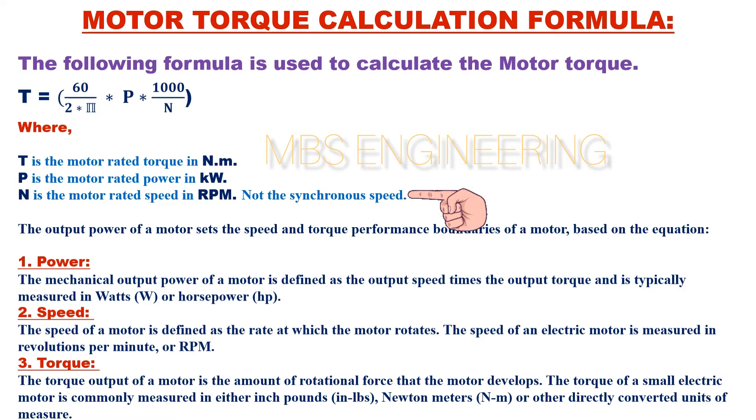The output power of a motor sets the speed and torque performance boundaries of a motor, based on the above equation.